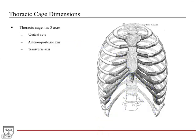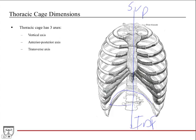The thoracic cage has three axes on which it moves. First is the vertical axis — superior and inferior movement — which is mainly driven by the diaphragm going up and down. Then there's the anterior-posterior axis, moving back to front. And then the transverse axis, which is from side to side — the horizontal axis.